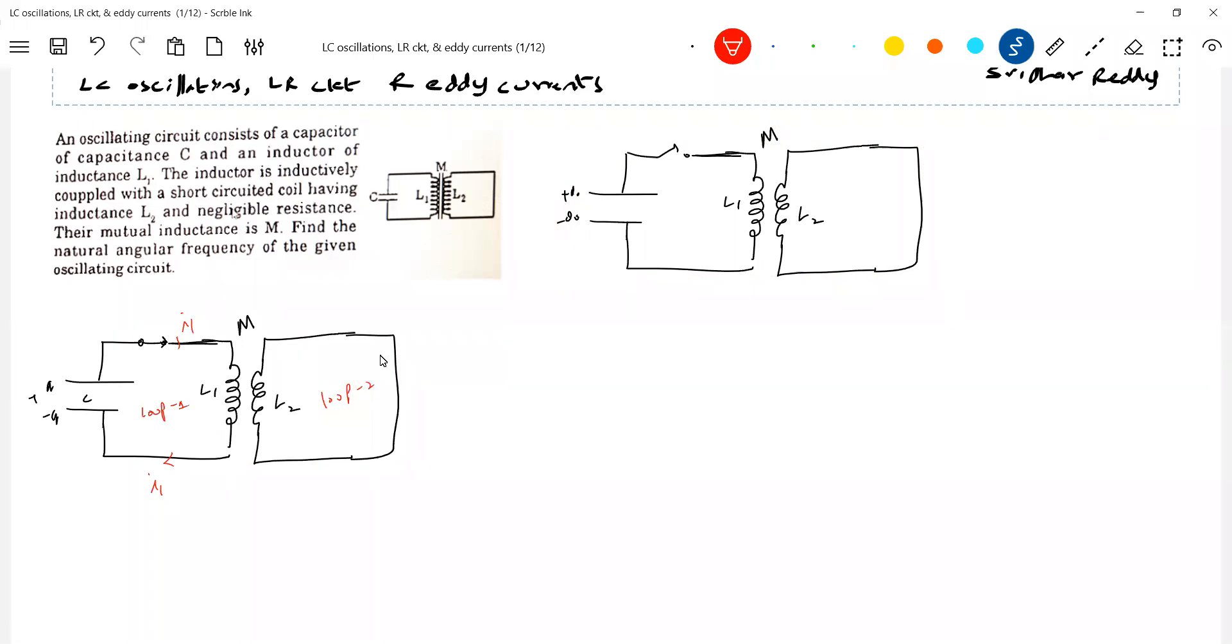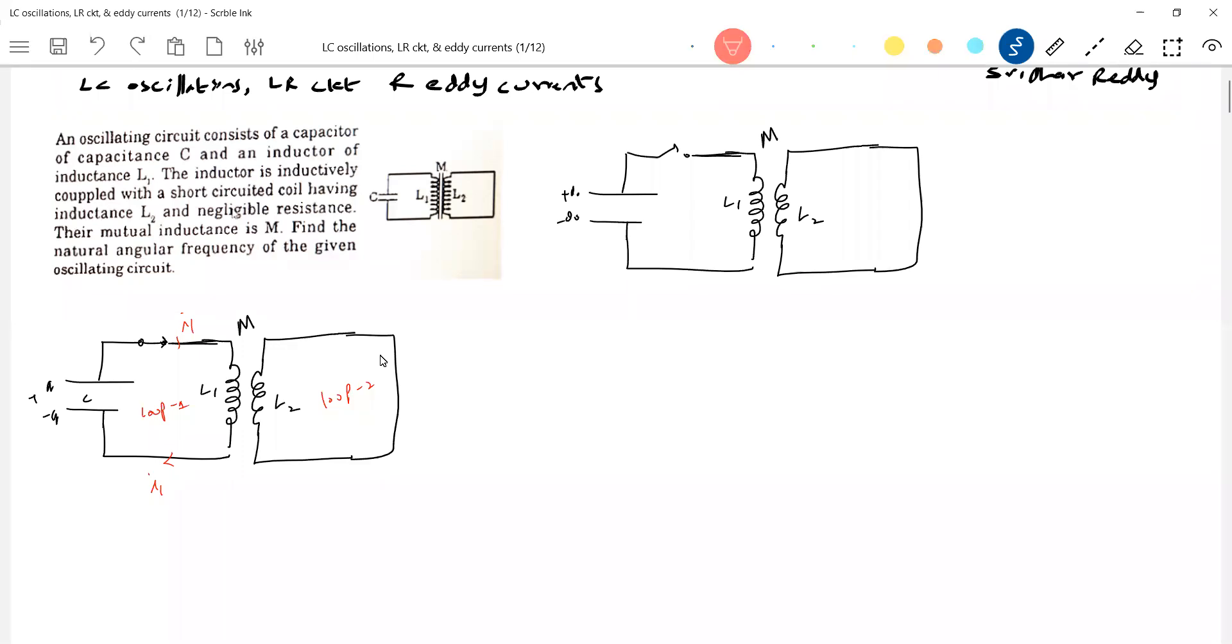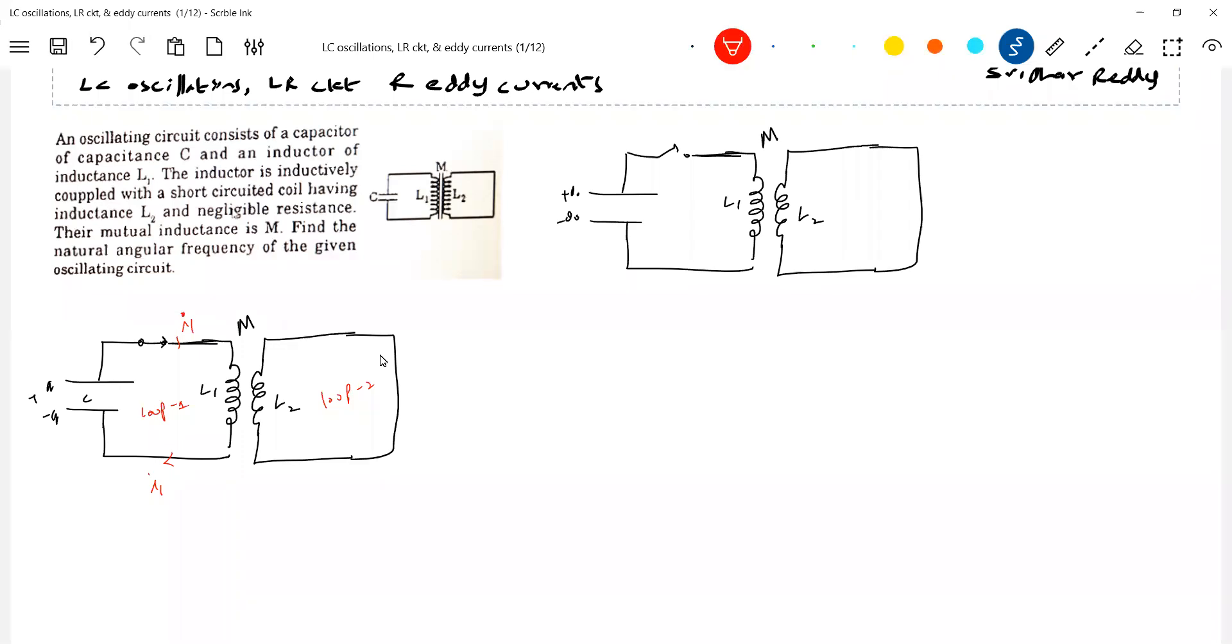A current is flowing here, and there's a mutual inductance between them. What is the EMF induced in the second loop? EMF E2 should be equal to M di1 by dt, and we know this current is a variable current. So EMF induced in the second loop should be equal to M di1 by dt.